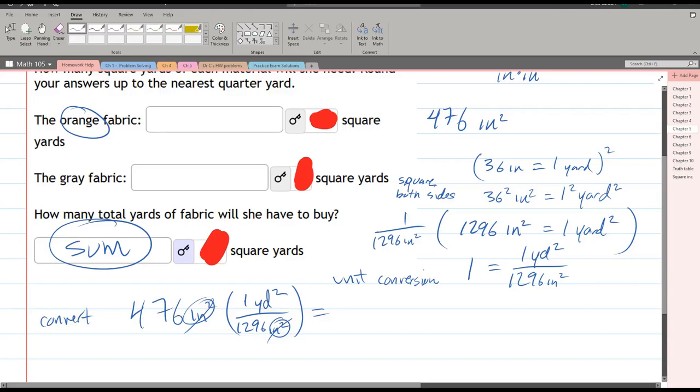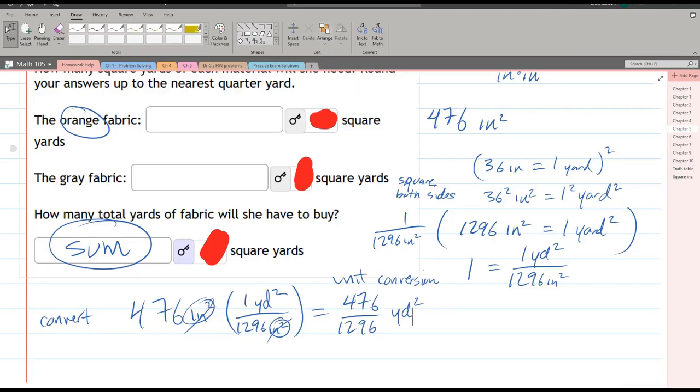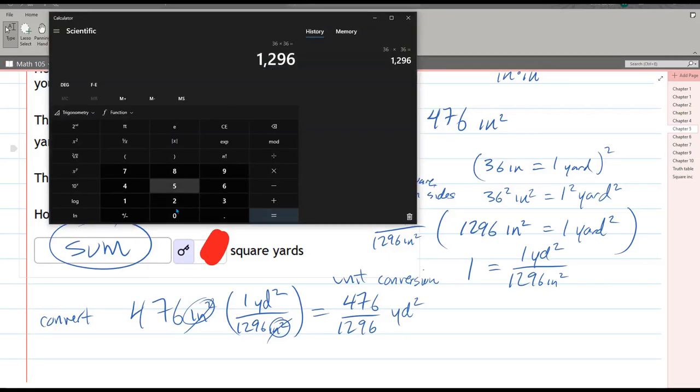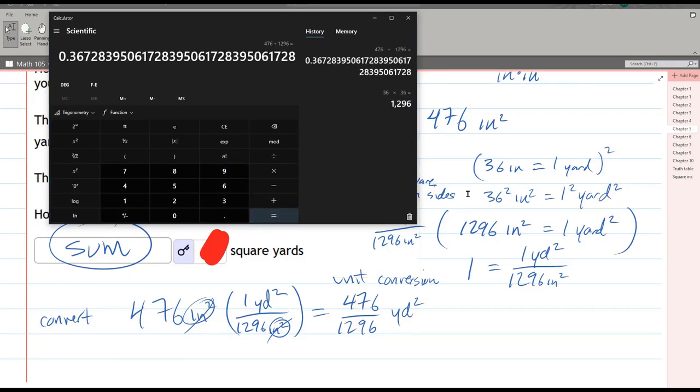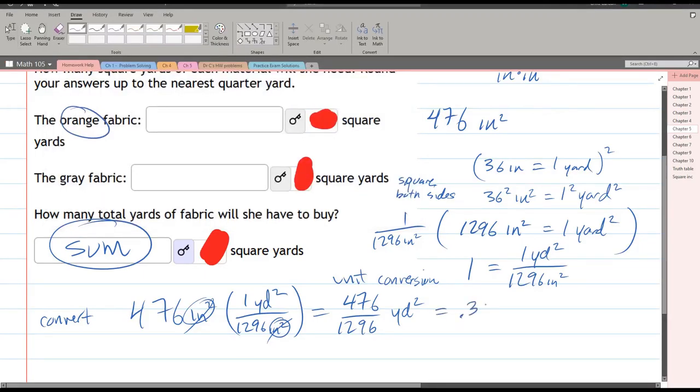476 times one doesn't matter, so it's just 476 divided by 1296. What is left is just the yards squared. We'll take 476 and divide it by 1296. It's clearly less than one. We get 0.367 something.